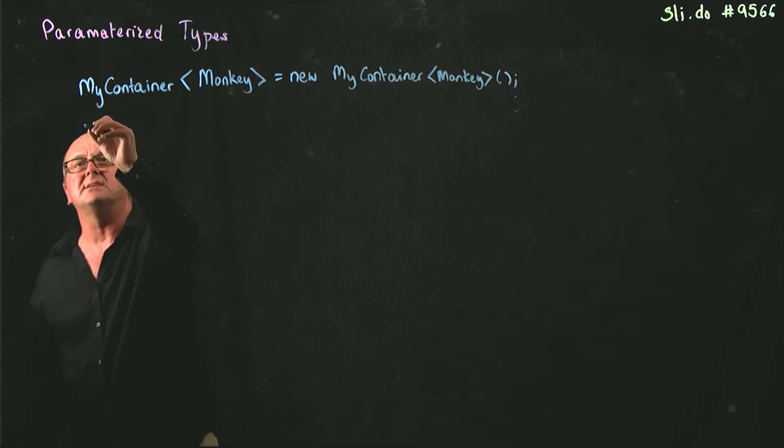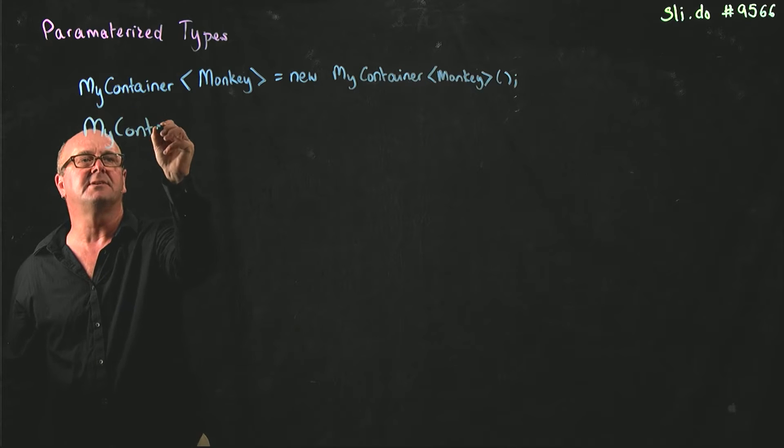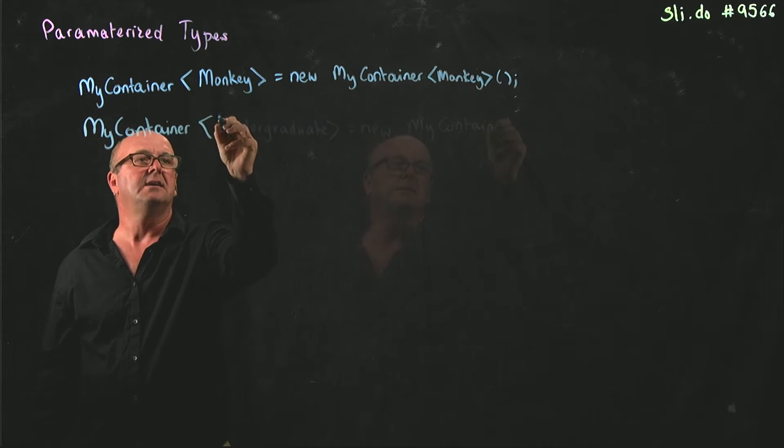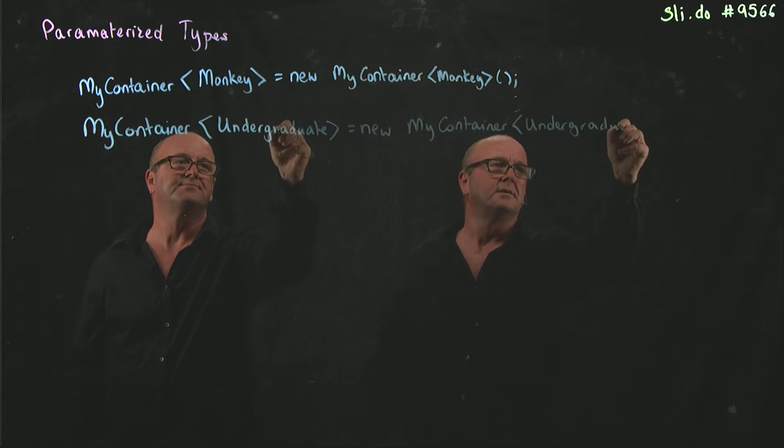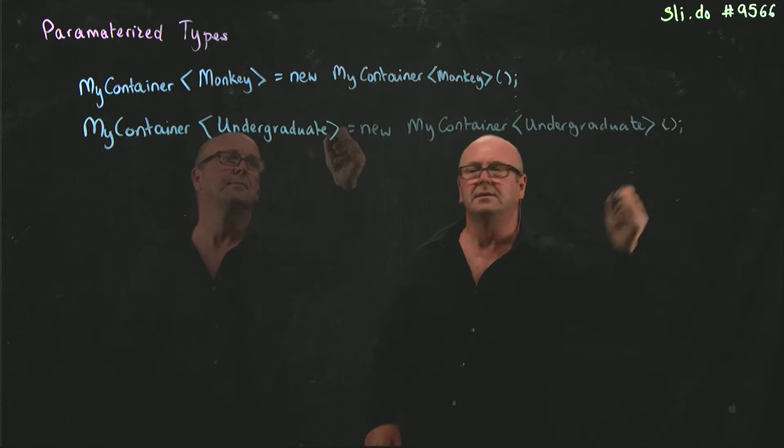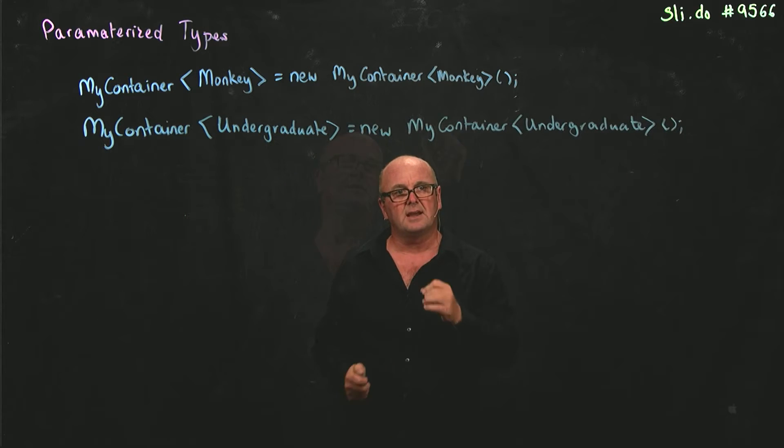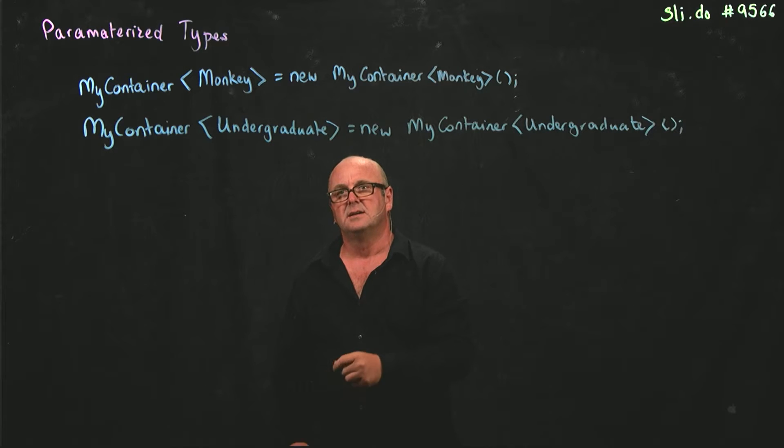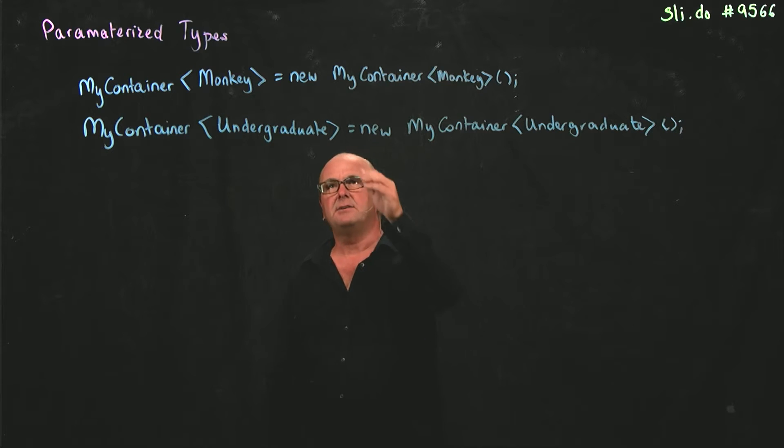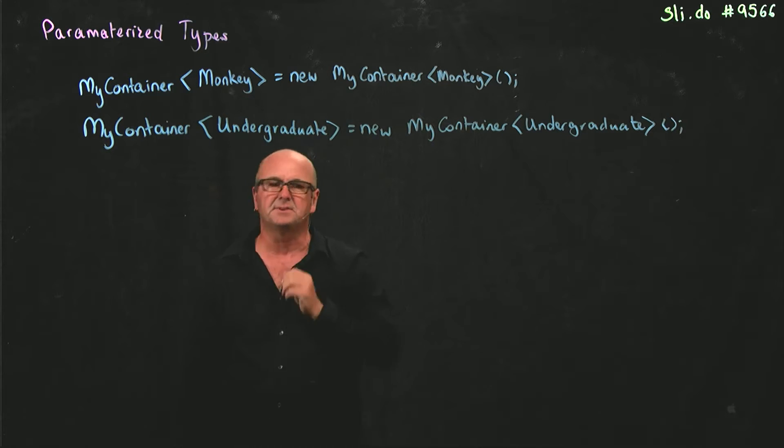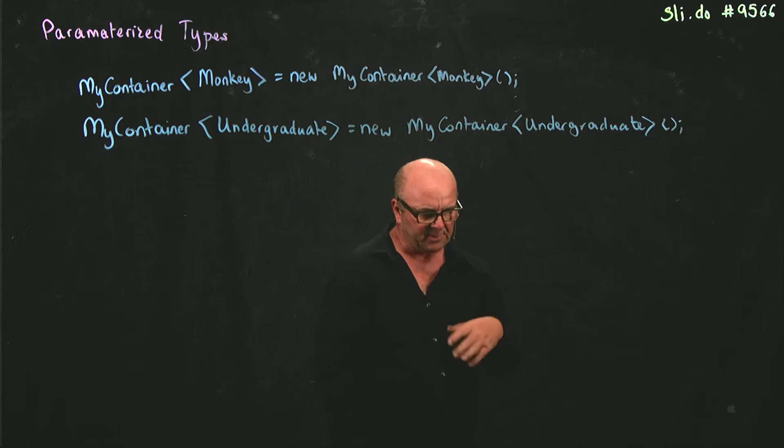But I can reuse the container later on, somewhere else in my code, and say I want a container that can hold undergraduates. The advantage here is that I only have to write my container once, debug it once, and make sure all the methods are correct once. Once I've got that container up and running, I can use it for monkeys, undergraduates, strings, integers, as many different things as I want.